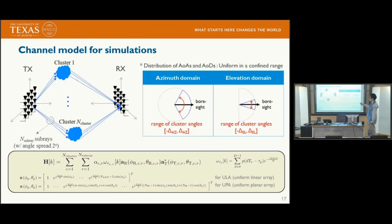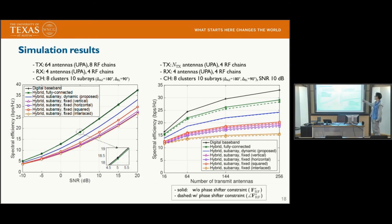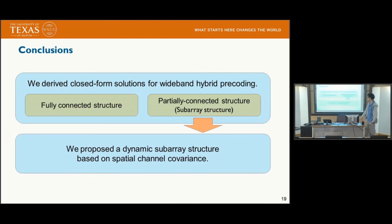This is the channel model for our simulation. We use a geometric channel model where each channel path has multiple sub-rays. The simulation results show that the fully-connected case is very close to the digital baseband case. The dynamic sub-array structure performs better than any fixed sub-array structures. We derived closed-form solutions for wideband hybrid pre-coding in both fully-connected and partially-connected structures, and proposed a dynamic sub-array structure based on the spatial channel covariance matrix.